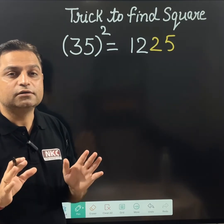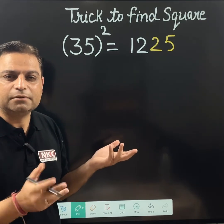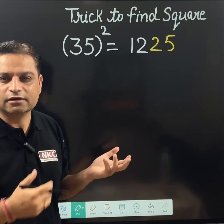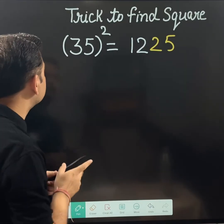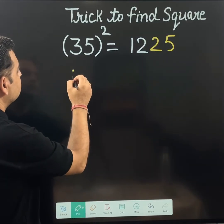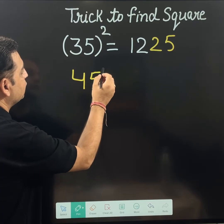And we didn't need to do any working out — using pen and paper we can directly write the answer. Let us try one more question. Let's suppose we have 45 squared.